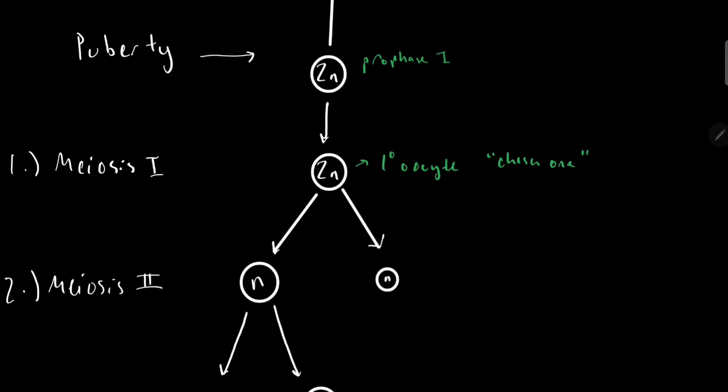This cell will undergo meiosis I and it will separate the homologous pairs. So we have two, it goes from a diploid to two haploid cells. Now, one of these cells will become the first polar body, which is a small cell that buds off from the oocyte after the meiotic division and does not develop into the ova, as it has very little cytoplasm.